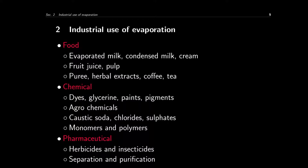Now let's look at some industrial uses of evaporation. In the food industry, for example, to produce evaporated milk, condensed milk, or cream, evaporation is widely used. For fruit juice or pulp, evaporation is also needed. To produce puriform food or herbal extract, coffee and tea — in all of these processes, evaporation is used. In the chemical sector, dyes, glycerin, paints, and pigments all use evaporation operations.